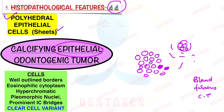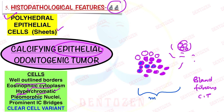The epithelial cells have well-outlined borders, and the cytoplasm is pink eosinophilic. The nuclei are hyperchromatic — hyper means more, chroma means color, so we have dark staining nuclei. These nuclei can be pleomorphic, meaning they may be of different sizes and shapes, and sometimes can be very giant, with multinucleation also possible. Because of these nuclear features, histopathologically it can sometimes mimic malignancy, but it is a benign tumor. The intercellular bridges between cells are very prominent.